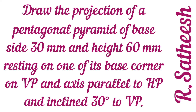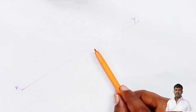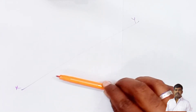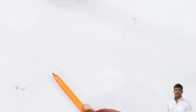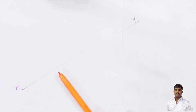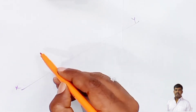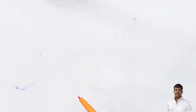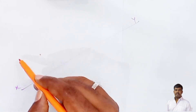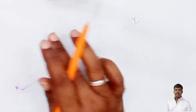First, draw the XY reference line. The axis of the solid is inclined to VP, so before tilting it is perpendicular to VP. Therefore the true shape — the pentagon — is visible only on the front view. While tilting, one of its base corners is on VP. So in the front view, the corner is on VP — right side corner, left side edge.